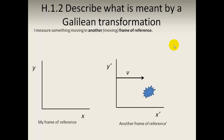So what is meant by a Galilean transformation? This is basically when I measure something which is happening in somebody else's frame of reference. My frame of reference is the Y and X axes, and the other frame of reference is moving at a velocity V relative to mine, and he measures in Y prime and X prime.